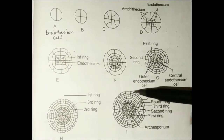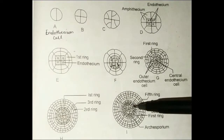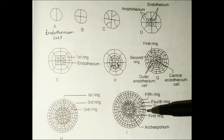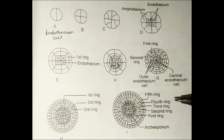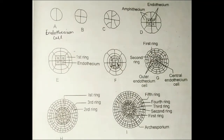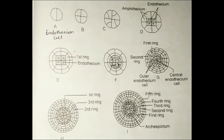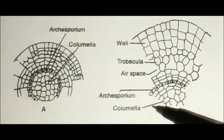Rings continue to be cut up to the fifth ring. After the fifth ring is cut, from the fifth ring the columella is formed. The spore sac and archesporium formation is also formed, as shown in the chart. This specific structure is described by the scientist Goebel as the fundamental square method.